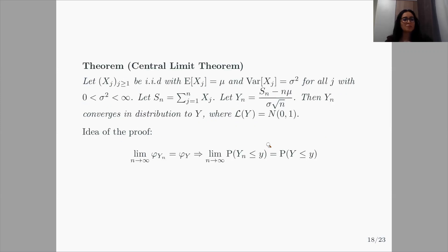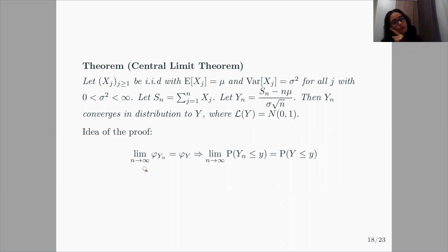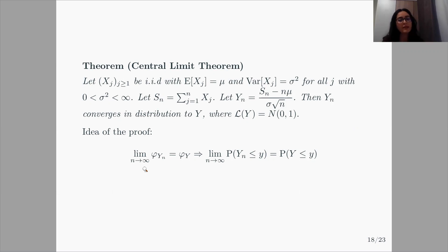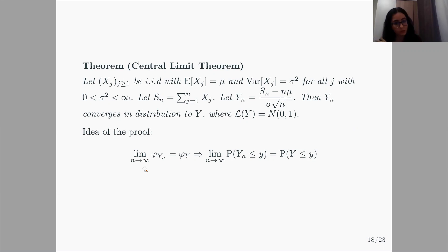The proof of the central limit theorem will use the following idea: if the characteristic functions of y_n's approach the characteristic function of y, which is a normal distribution, then we know that y_n's converge in distribution to y, which is normal.